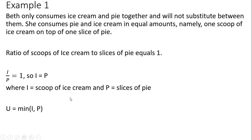So now let's just evaluate our utility function at some values for I and P. So two scoops of ice cream and two slices of pie, putting in those values, this consumer will get a utility of two.